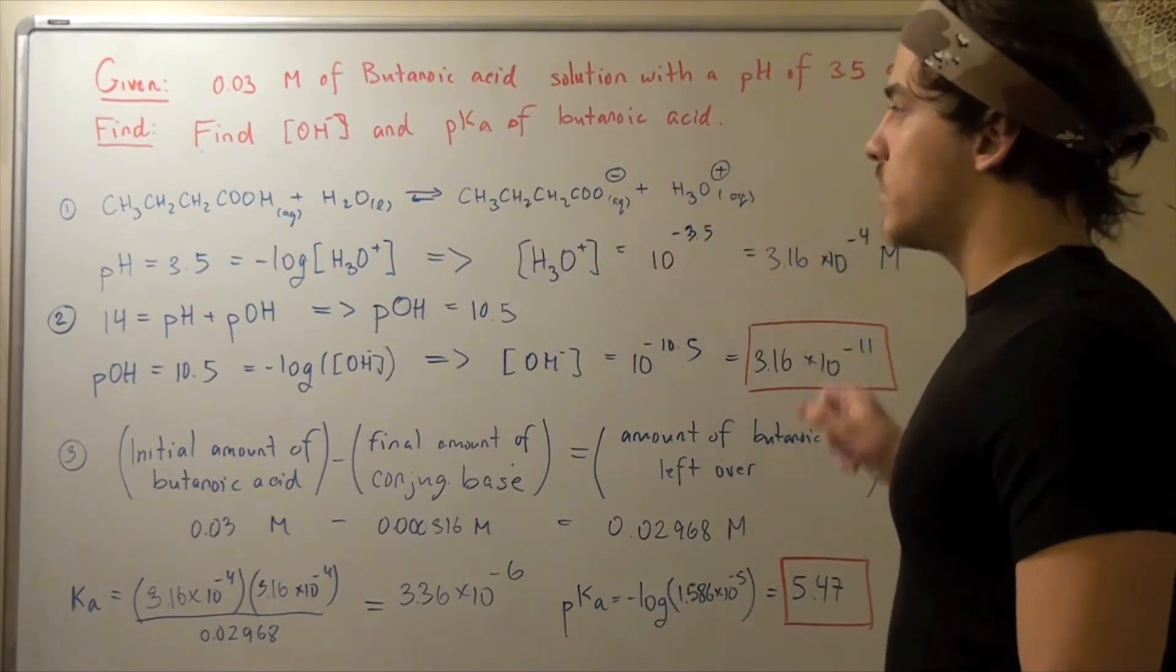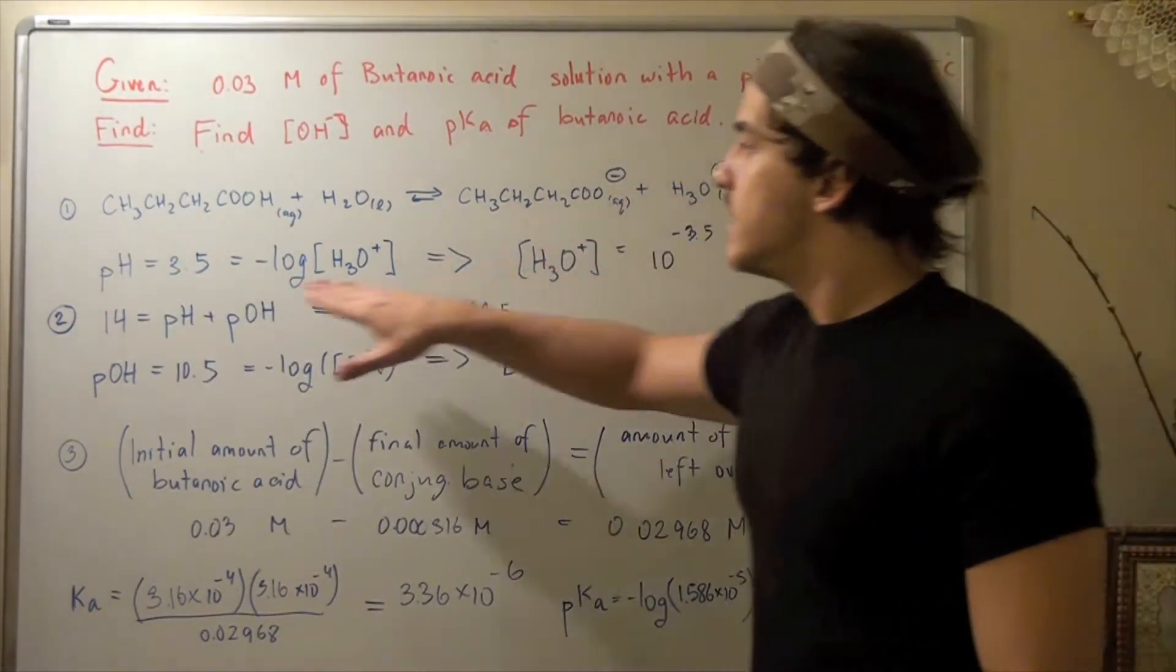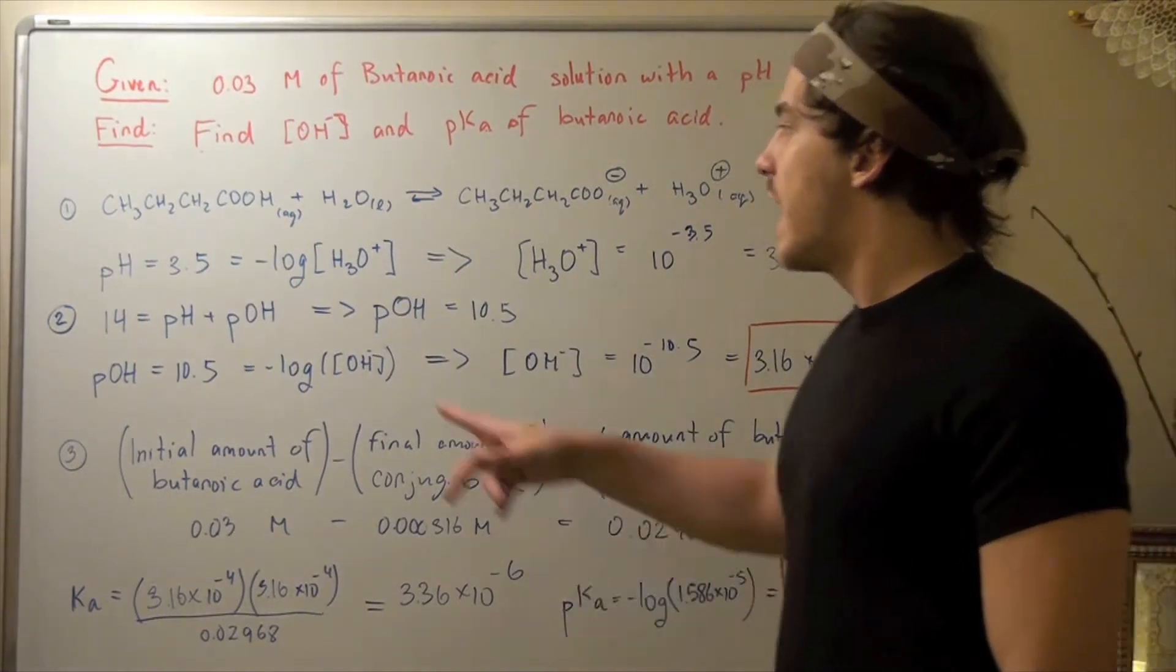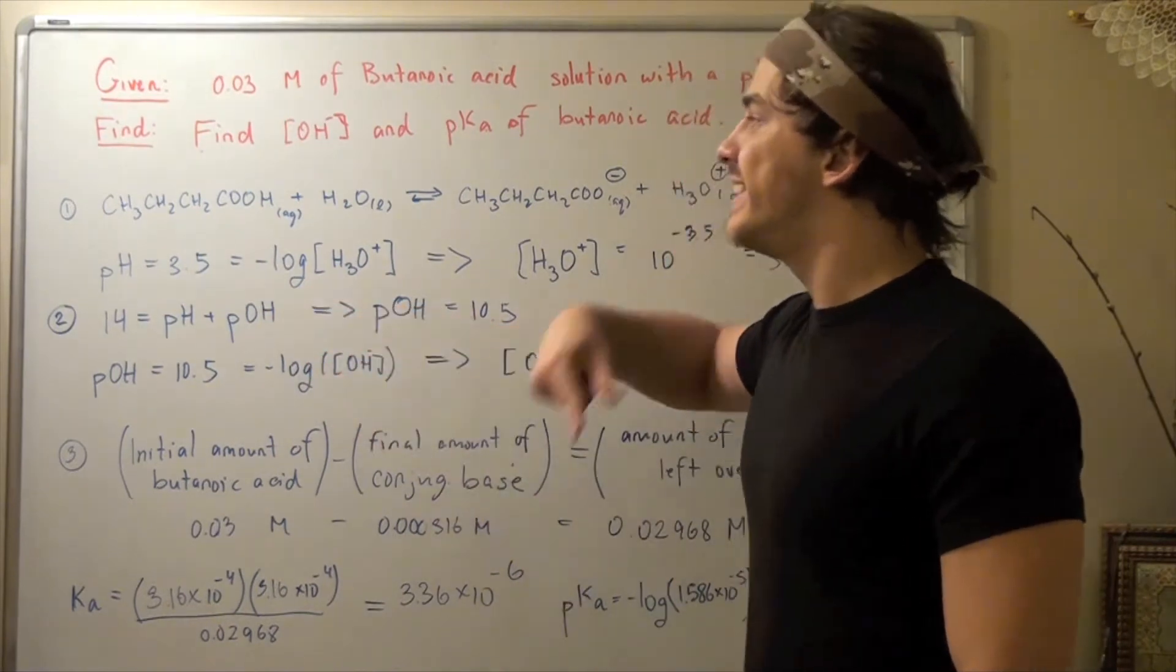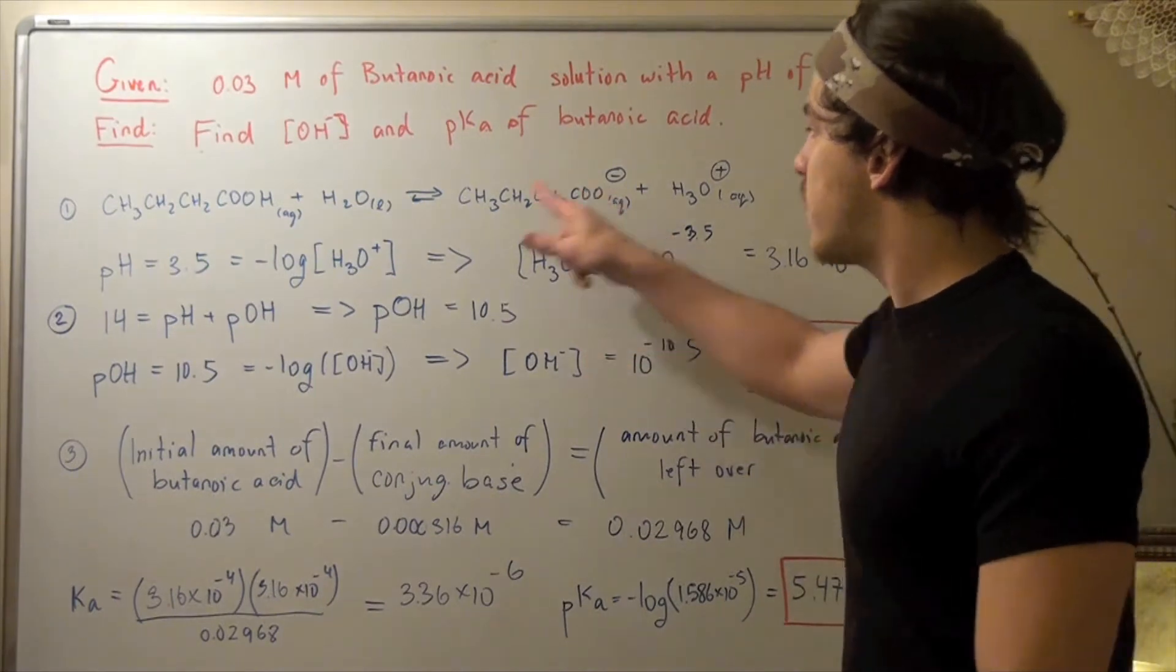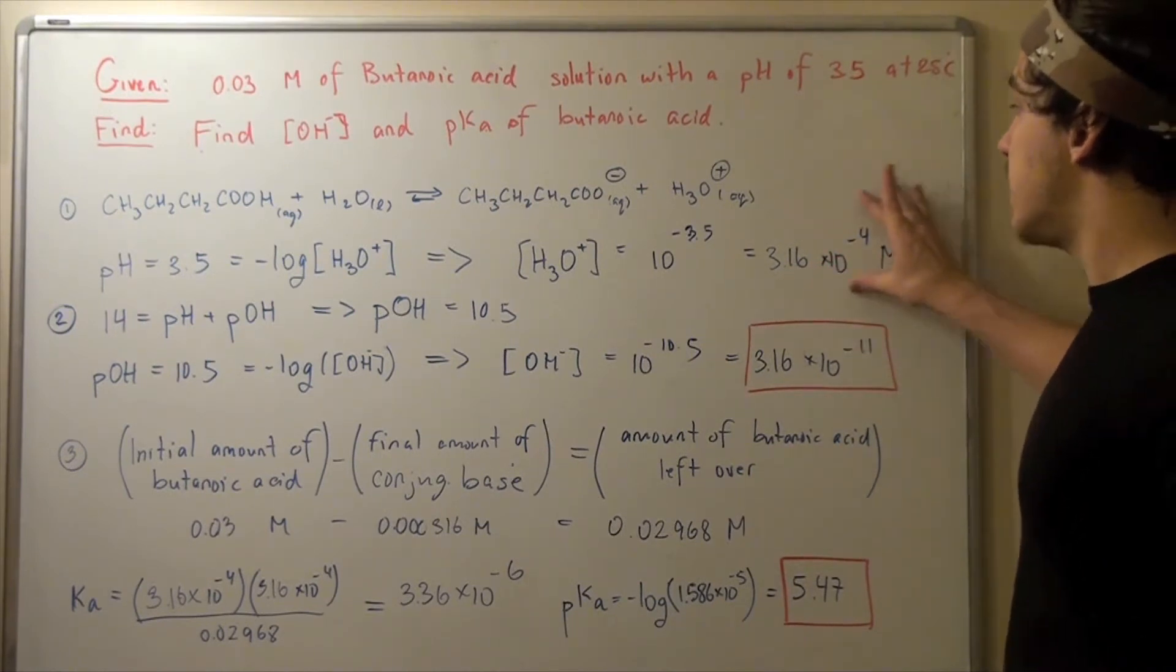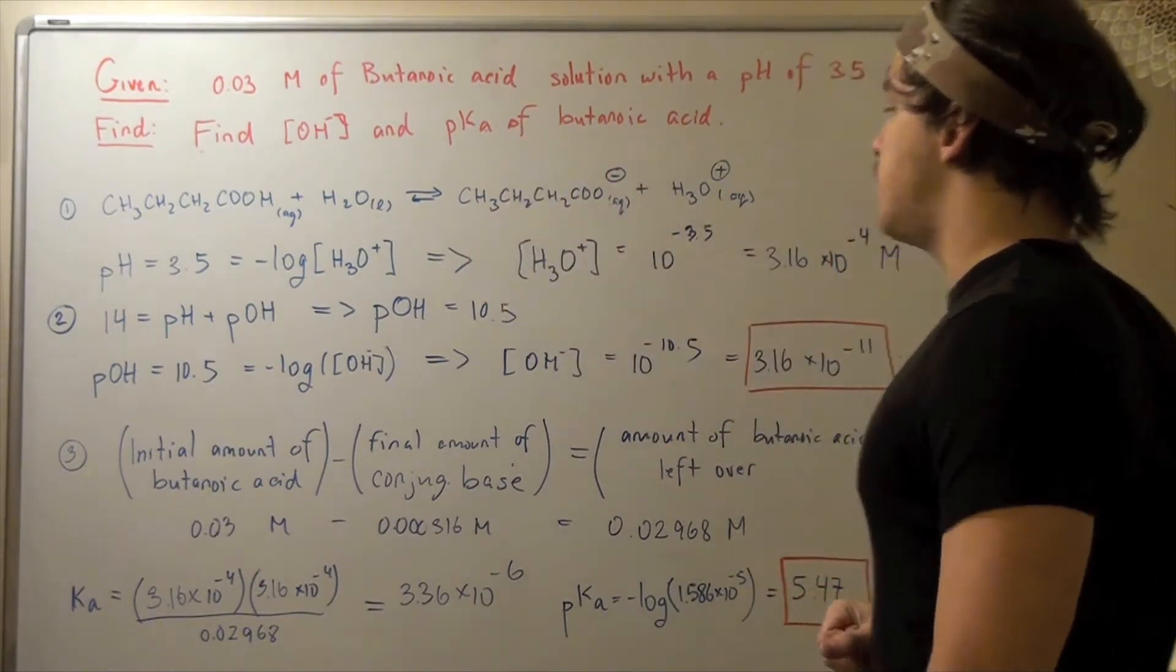Let's find the concentration of hydronium. pH equals 3.5 from my given information, equals negative log of the concentration of hydronium, and that means we have to convert to exponents. Our base is 10, we bring the negative over, we get base 10 to the negative 3.5 because this is my exponent. So we get our concentration equals 10 to negative 3.5, and we get 3.16 times 10 to negative 4 molar. This is my concentration of hydronium as well as my concentration of conjugate base.